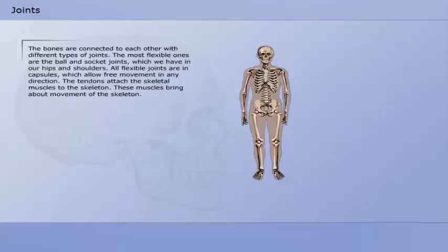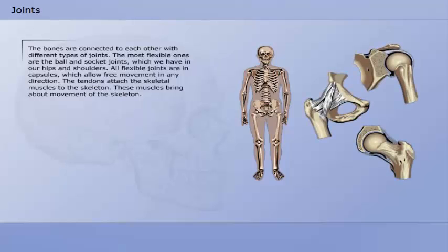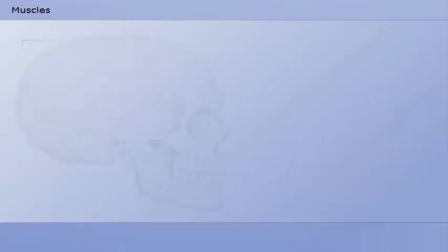The bones are connected to each other with different types of joints. The most flexible ones are the ball and socket joints which we have in our hips and shoulders. All flexible joints are in capsules which allow free movement in any direction. The tendons attach the skeletal muscles to the skeleton. These muscles bring about movement of the skeleton.